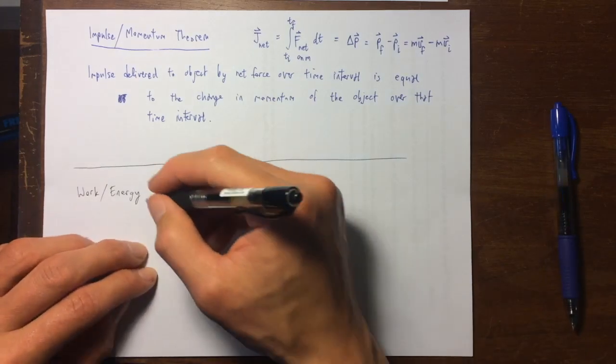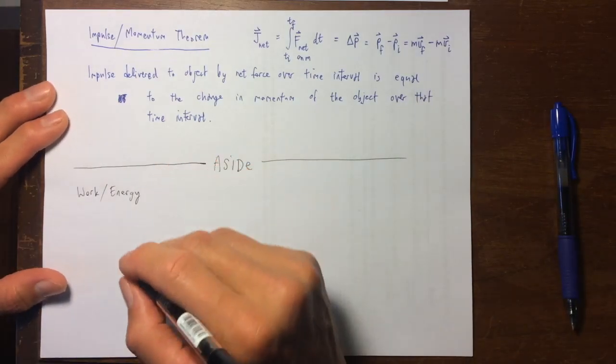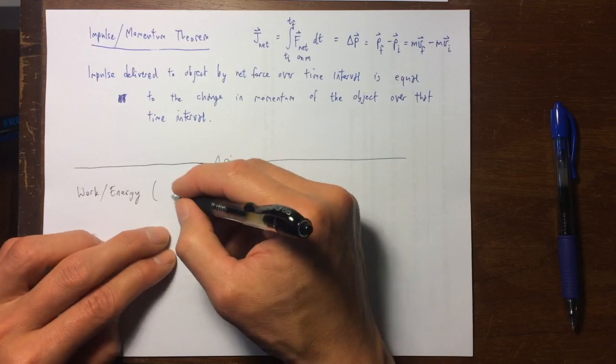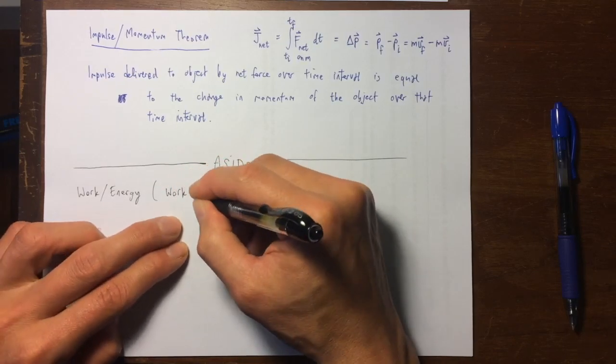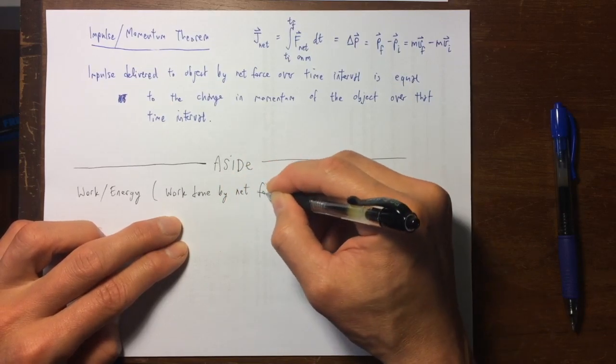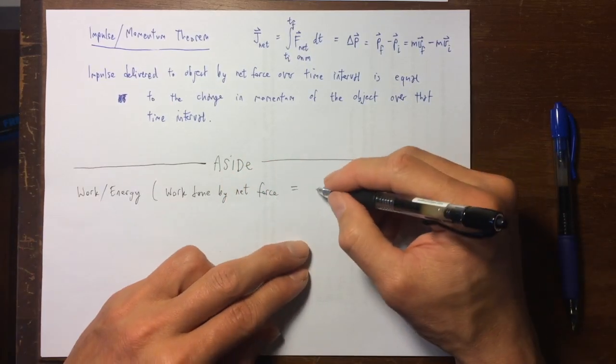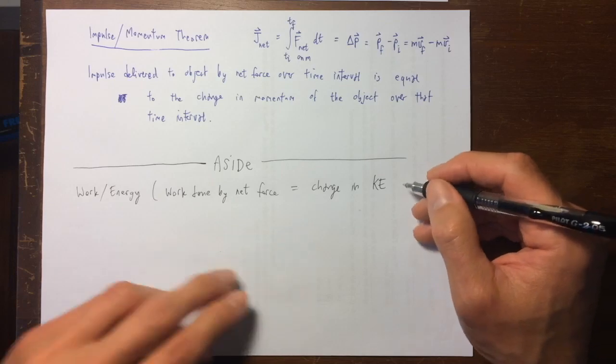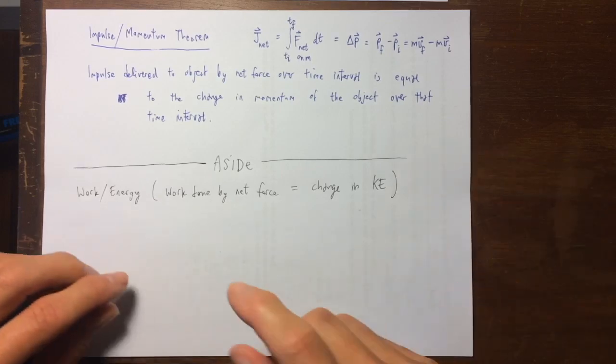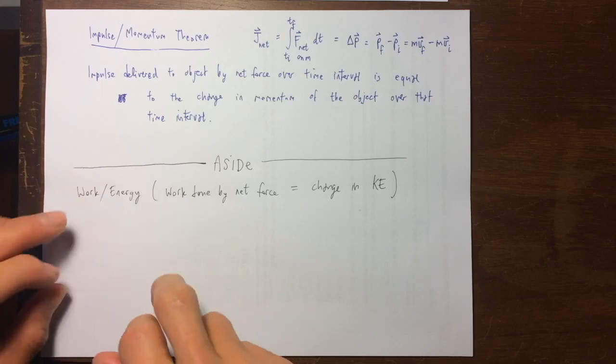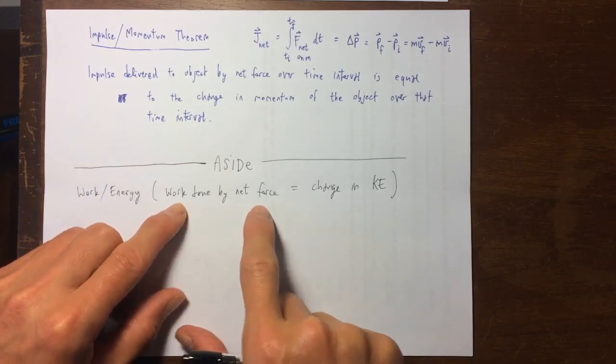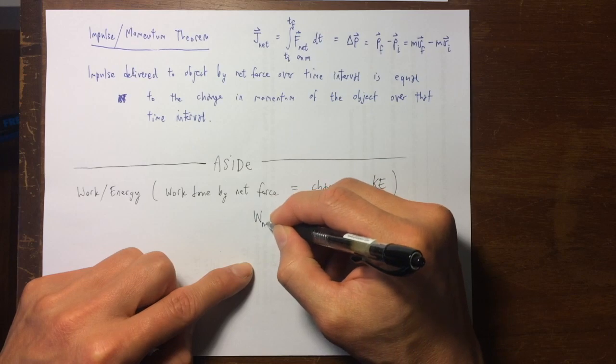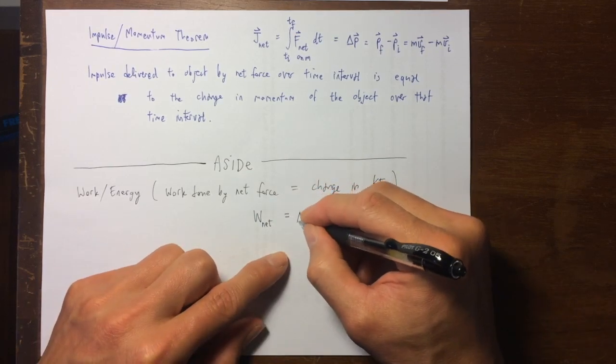So the work energy theorem, I'm pretty sure I did it in an earlier video that I made. The work energy theorem, I think it really ought to be called work done by net force equals change in kinetic energy theorem. So it does have something to do with work and energy, but in particular I think this is the best way to write it. The work done by the net force is equal to the change in the kinetic energy.